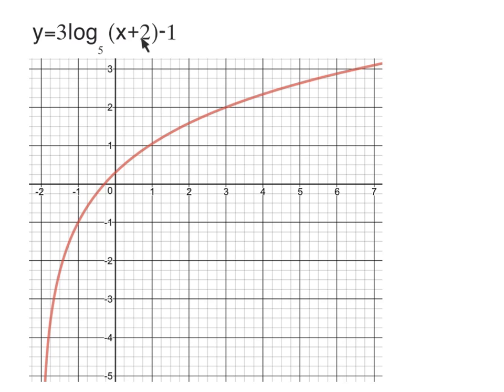First step is to look for h, k. h is always the opposite of this, and that's k. So that would be negative 2, negative 1.